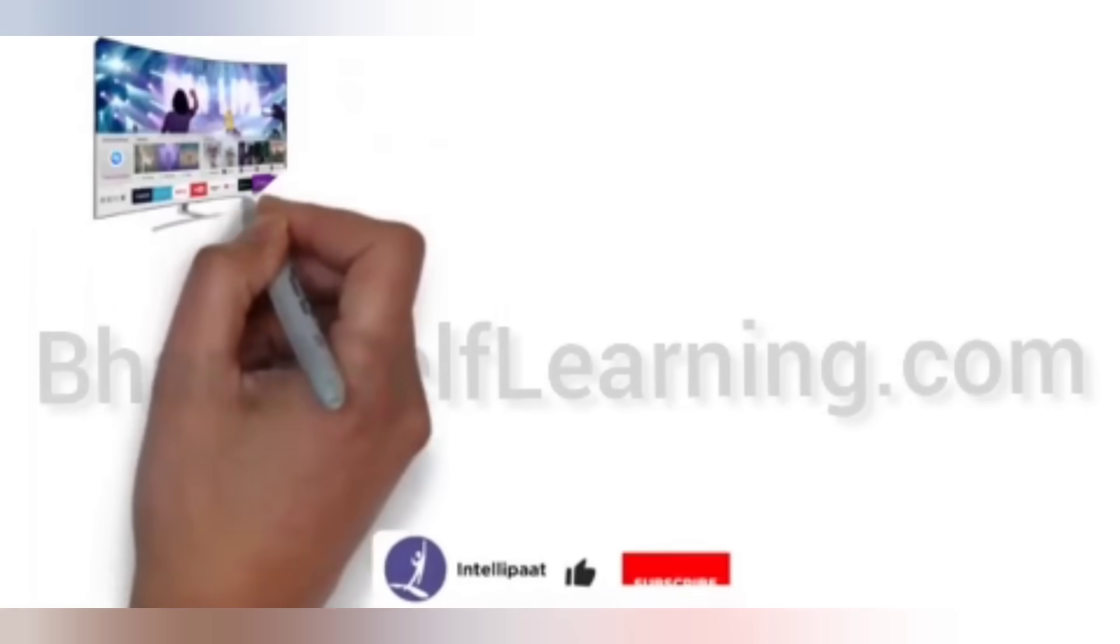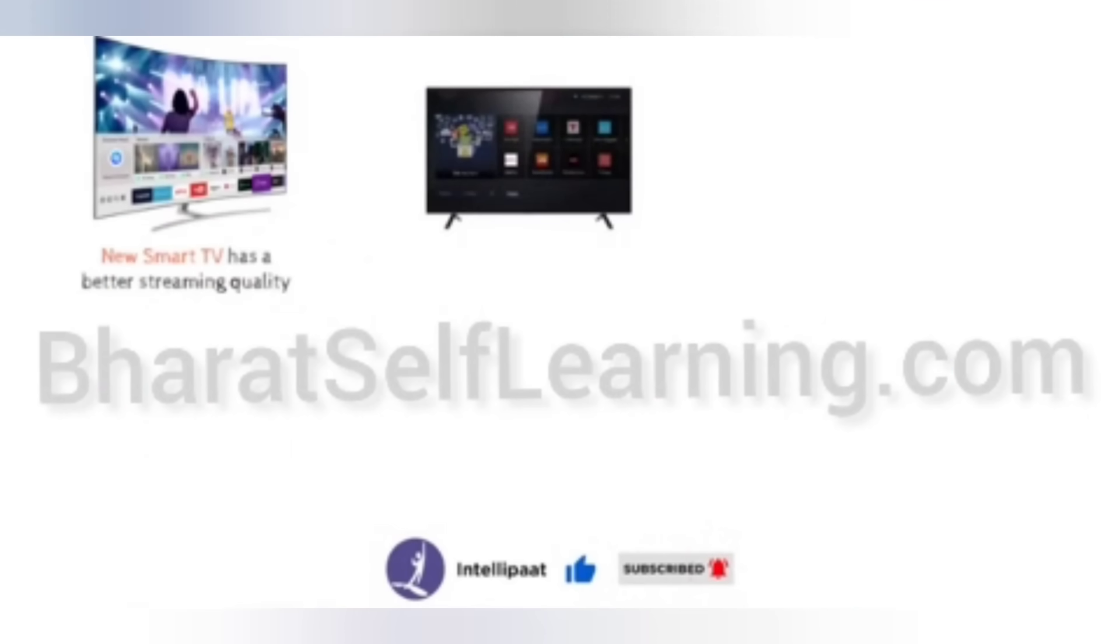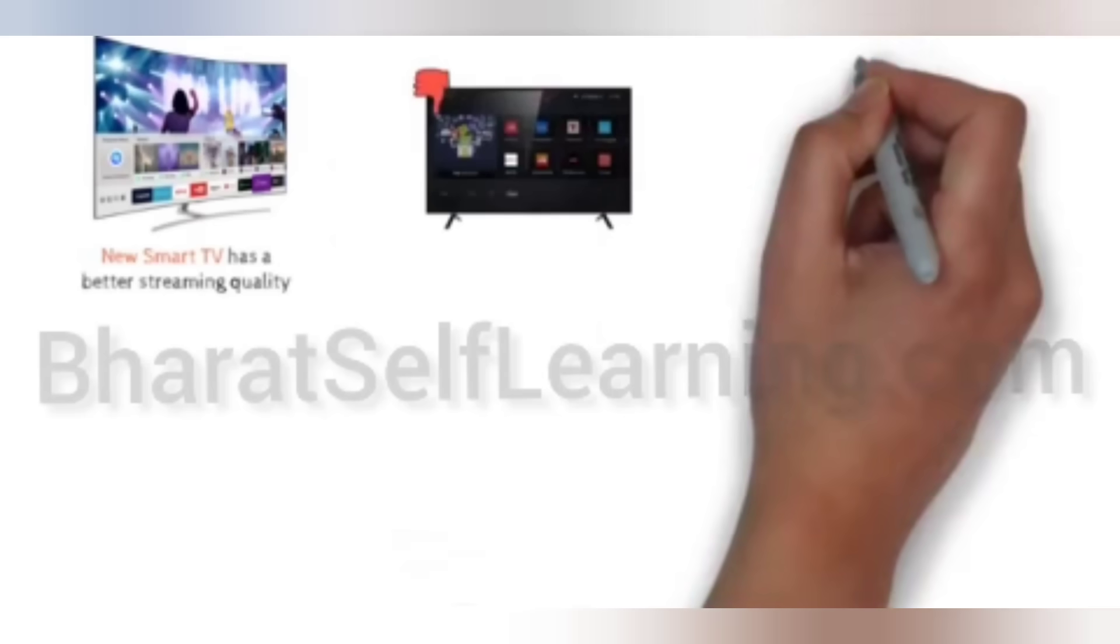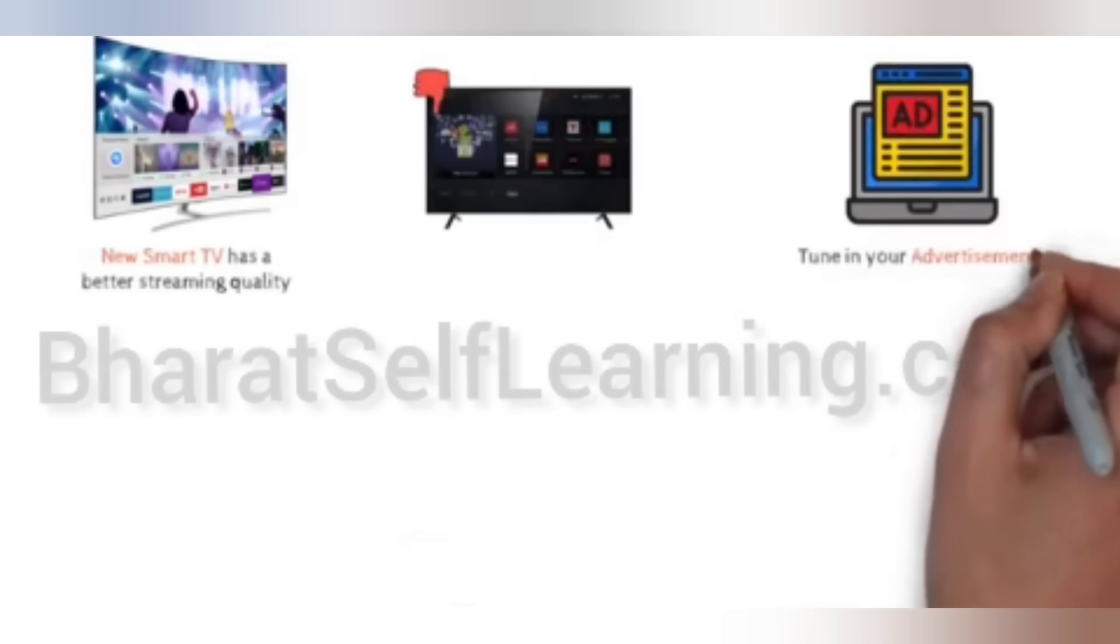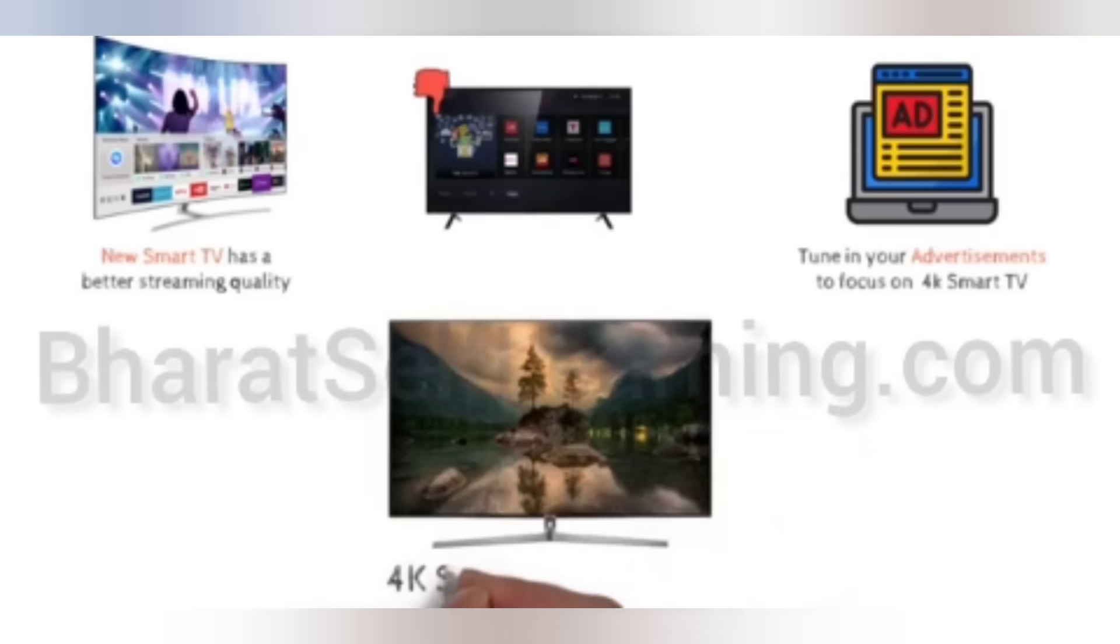The reason behind this might be that the new smart TV has a better streaming quality than the previous versions. Using this information, you could tune your advertisements to focus on users who bought the previous version of the smart TV and are interested in getting 4K streaming quality. This data can also be used to attract new customers who did not go for the previous version but are very interested in a better version of the TV.